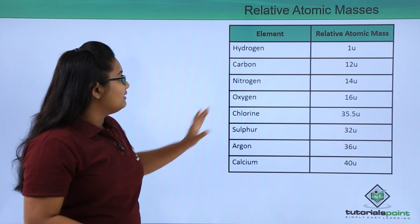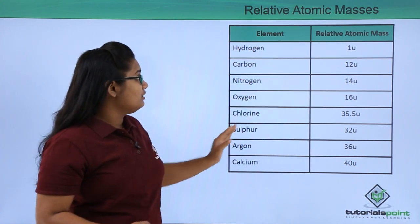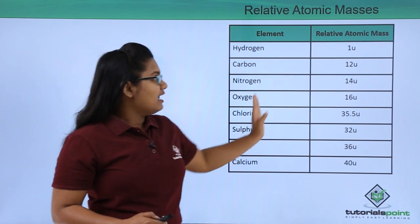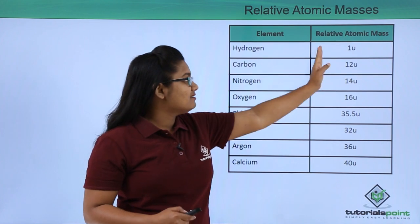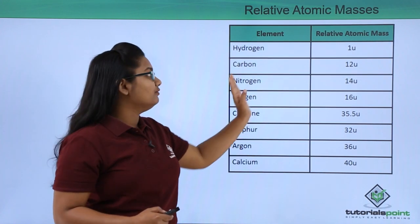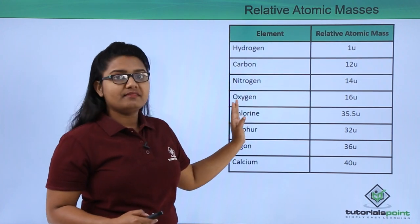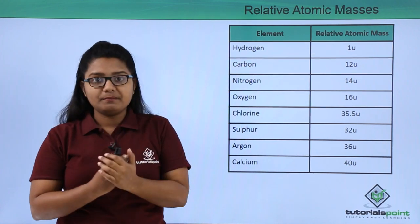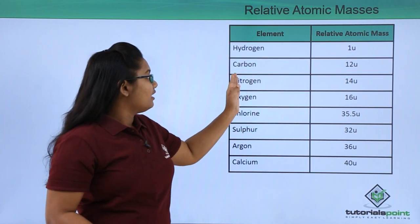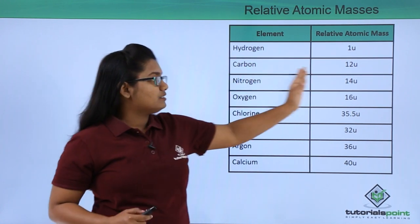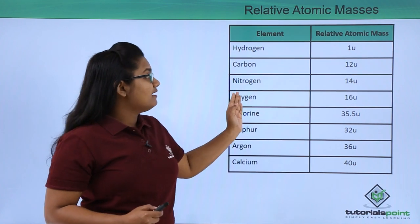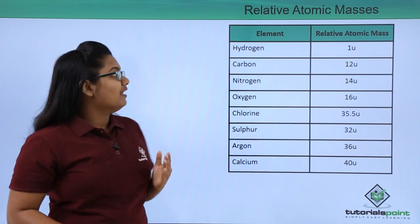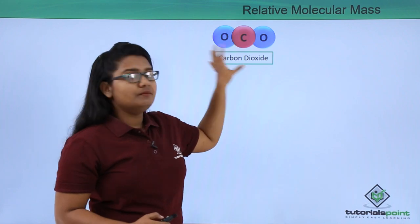In this table I have shown the atoms of different elements on one side and their relative atomic masses on the other. For example, a hydrogen atom has a relative atomic mass of 1u, a carbon atom is 12u, a nitrogen atom is 14u, and so on.